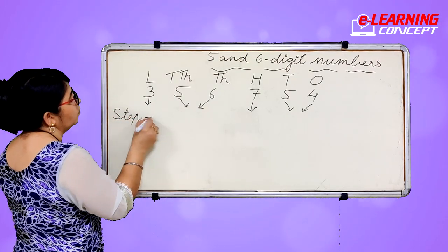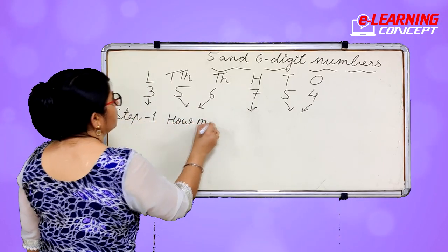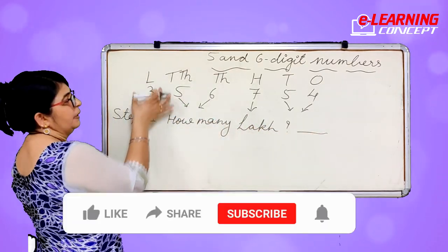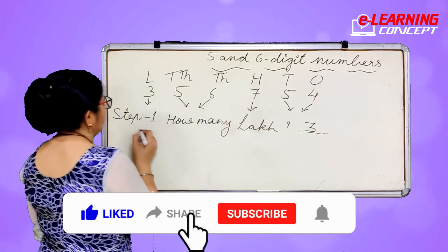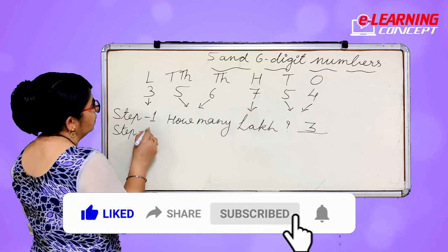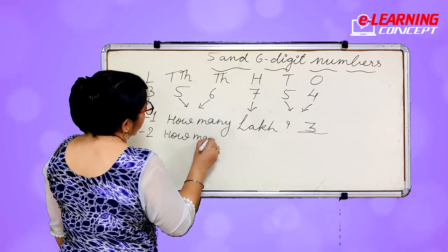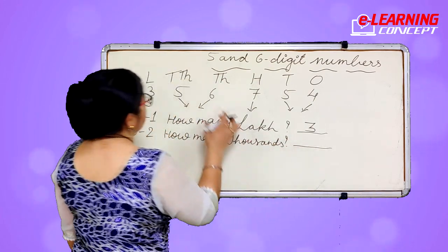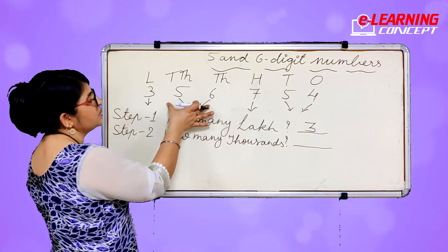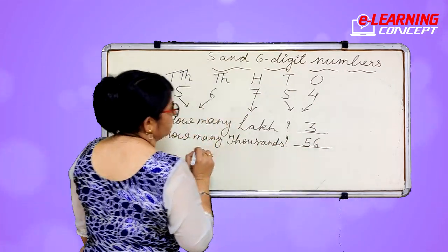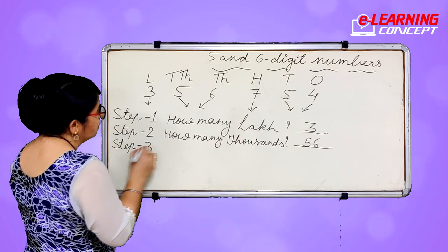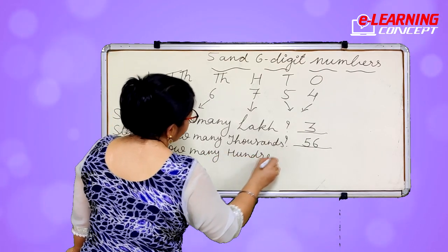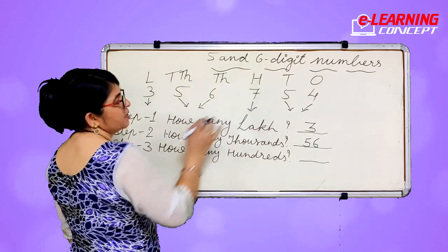Step 1: how many lakh? L means lakh — this is 3 lakh. Step 2: how many thousands? This is ten thousand and this is thousand, so taken together this is 56 — fifty-six thousand. Step 3: how many hundreds? H means hundred — this is seven hundred.